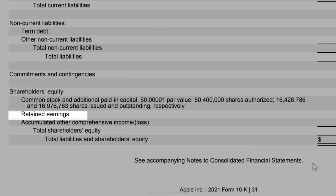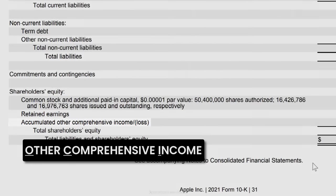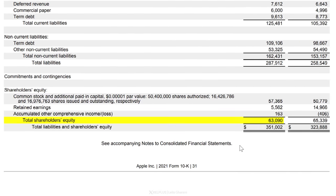There's also a smaller accounting item called OCI, which represents unrealized gains and losses. The sum of these is total equity — $63 billion. Generally, when you review balance sheets, you want equity to grow over time, as it shows the business is profitable and reinvesting its earnings into future growth opportunities.